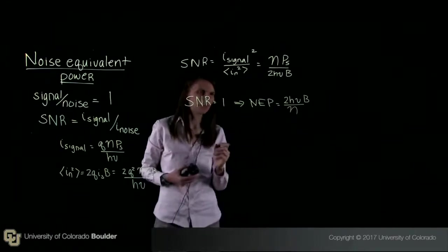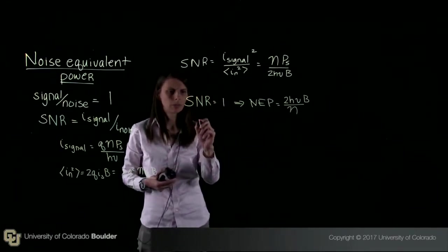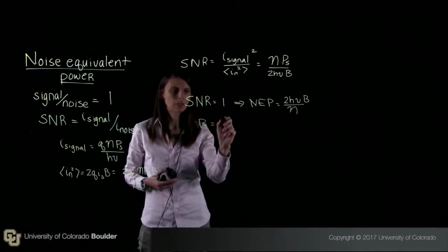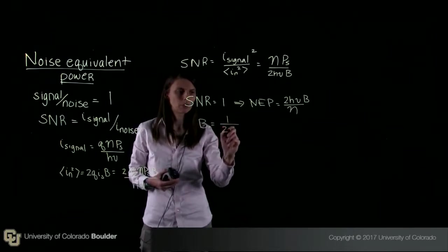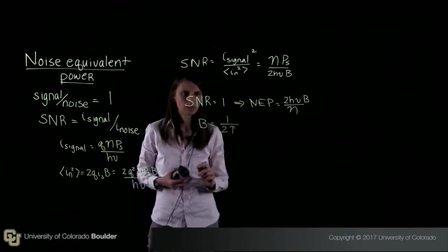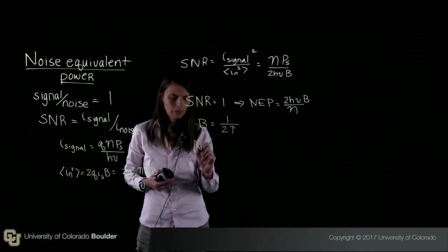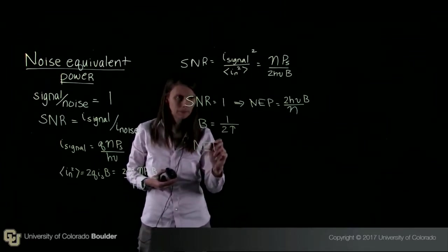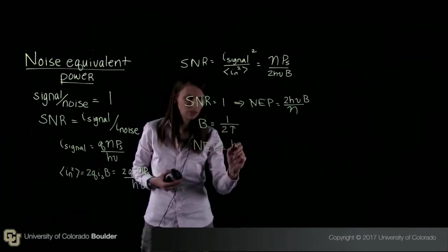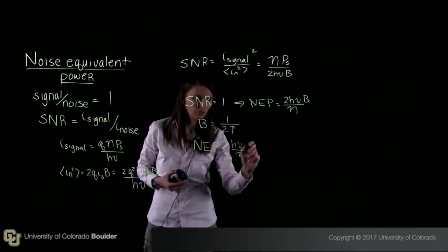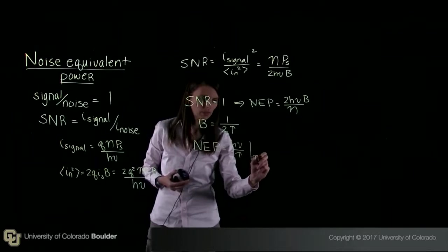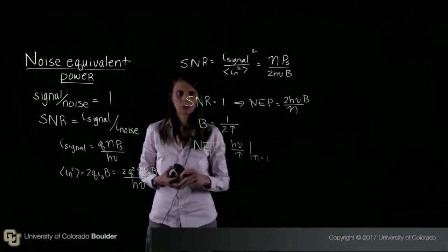I can go ahead and I can substitute for my bandwidth. You know that my bandwidth is also 1 over 2 times tau, which is the measurement interval. So now my noise equivalent power can be written as equal to H nu over tau. And this is for the case where eta, the quantum efficiency, we're assuming is 1.